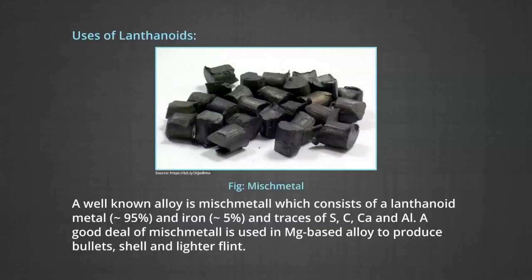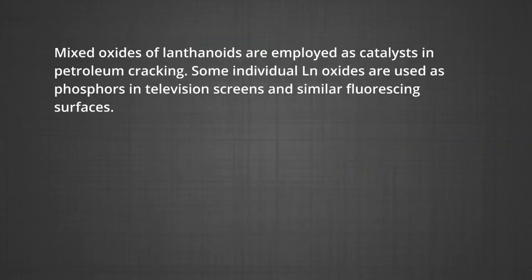The best single use of the lanthanides is for the production of alloy steels for plates and pipes. A well-known alloy is misch metal, which consists of lanthanide metal (95%) and iron (5%) with traces of sulphur, carbon, calcium and aluminium. A good deal of misch metal is used in magnesium-based alloys to produce bullets, shells and lighter flints. Mixed oxides of the lanthanides are employed as catalysts in petroleum cracking. Some individual lanthanide oxides are used as phosphors in television screens and similar fluorescing surfaces.